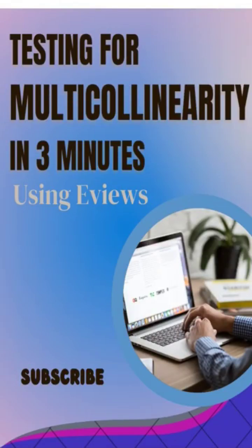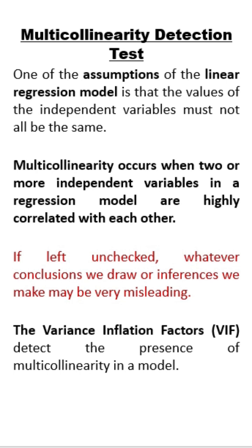Hello guys, welcome to Gigametrics. Today we'll be looking at testing for multicollinearity using eViews. One of the assumptions of the linear regression model is that the values of the independent variables must not all be the same. Multicollinearity occurs when two or more independent variables in the regression model are highly correlated with each other. If left unchecked, whatever conclusions we draw or inferences we make may be very misleading.